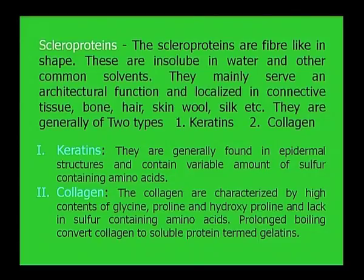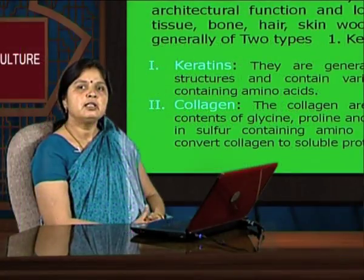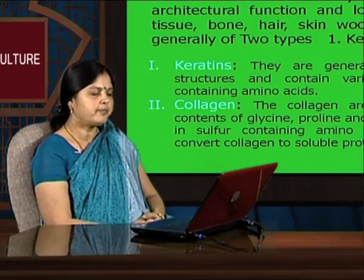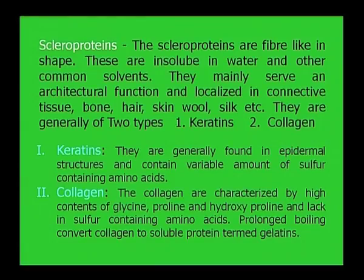Keratins are generally found in epidermal structures and contain variable amounts of sulfur-containing amino acids. The sulfur-containing amino acids may be methionine, cysteine, and cystine. The collagens are characterized by a high content of glycine, proline and hydroxyproline, and lack sulfur-containing amino acids. Prolonged boiling converts collagen to a soluble protein termed gelatin.